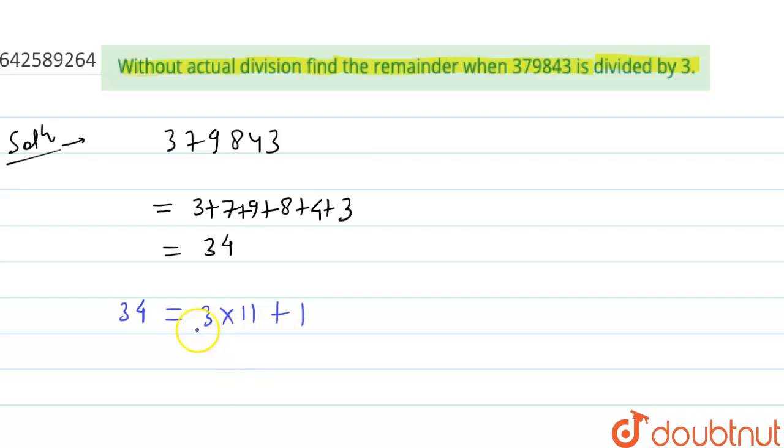So here we got the remainder as 1. We can say that the remainder is 1 when 379843 is divided by 3. I hope you understood the solution, thank you.